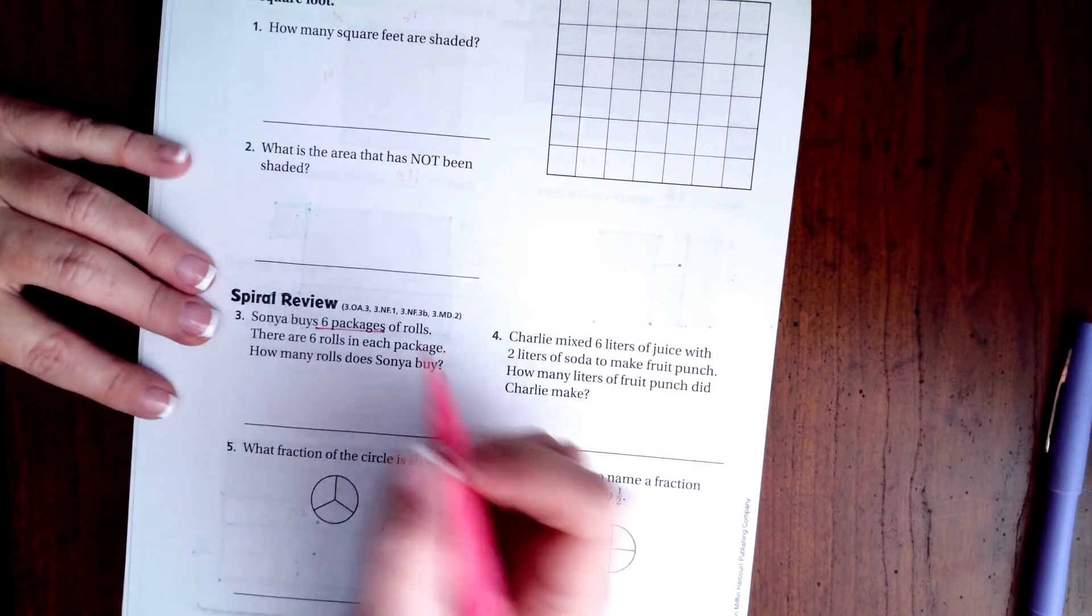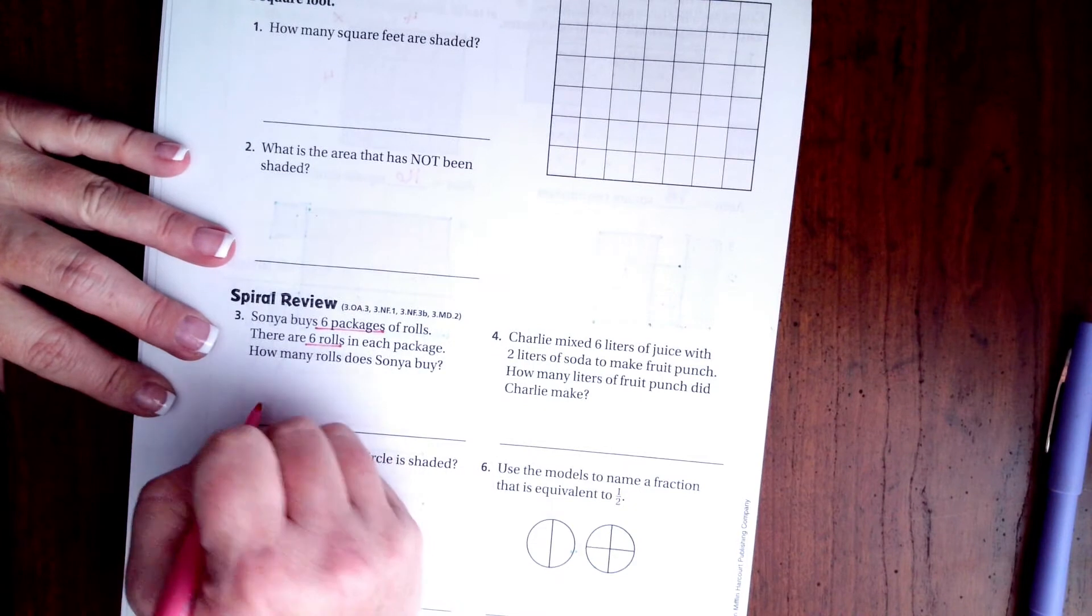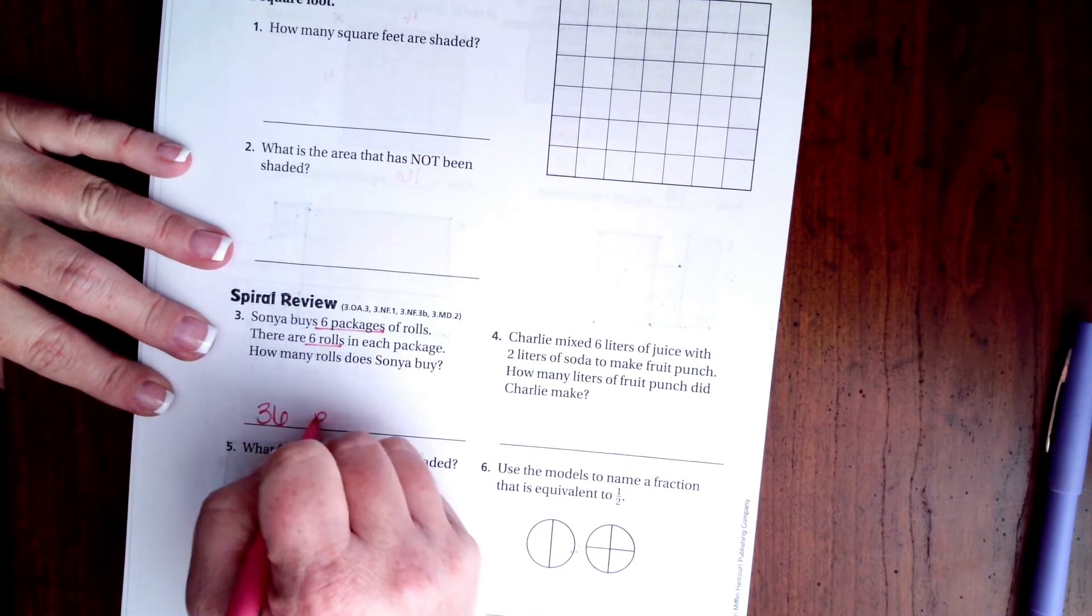It says, Sonia buys 6 packages of rolls. There are 6 rolls in each package. How many rolls did she buy? Well, 6 times 6 is 36 rolls.